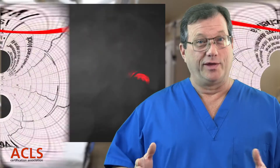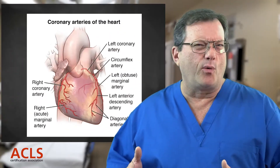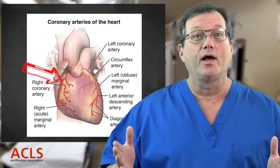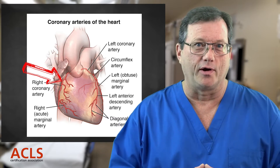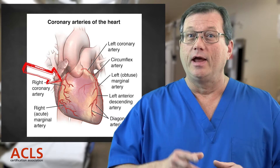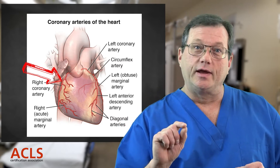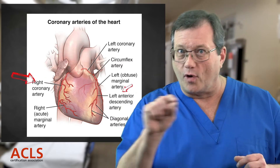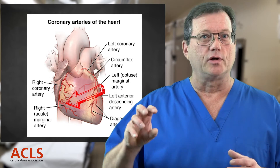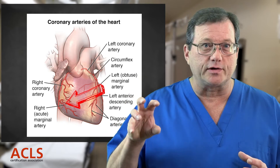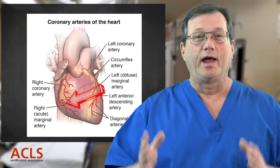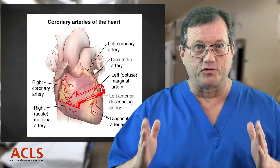The relationship between the inferior wall and the right ventricle is that they share the common right coronary artery. If the occlusion is proximal to that right marginal branch and the right ventricle is infarcting, it's going to have less output and less ability to contract - that's the issue.